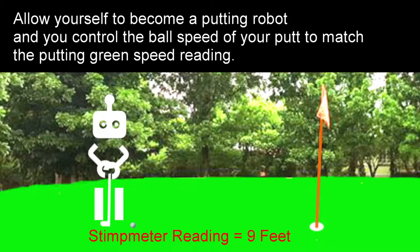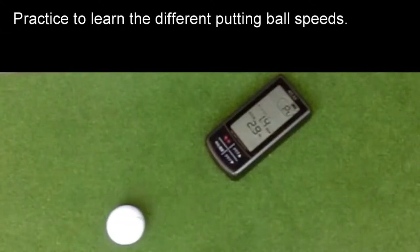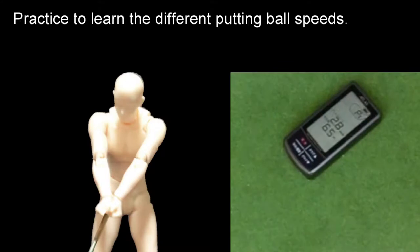Allow yourself to become a putting robot, and you control the ball speed of your putt to match the putting green speed reading. Practice to learn the different putting ball speeds.